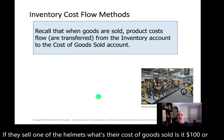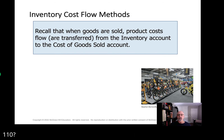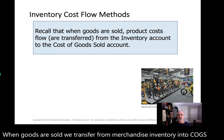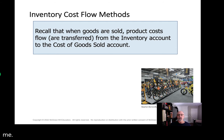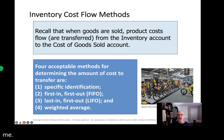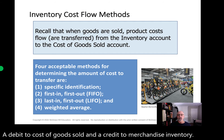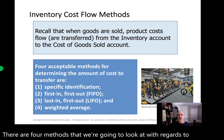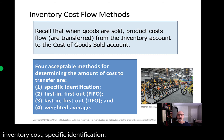Recall that when goods are sold, we transfer from merchandise inventory into COGS. The entry for the second half of a sale is a debit to cost of goods sold and a credit to merchandise inventory. There are four methods that we're going to look at with regards to inventory cost: specific identification, FIFO or first in first out, LIFO or last in first out, and weighted average.